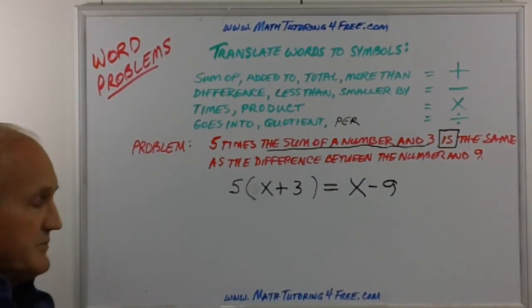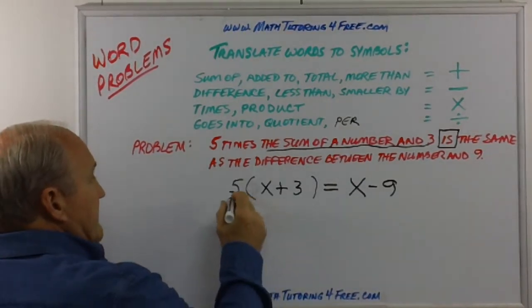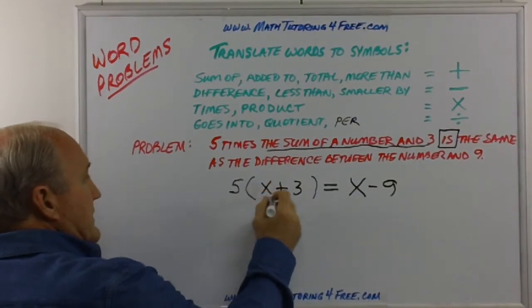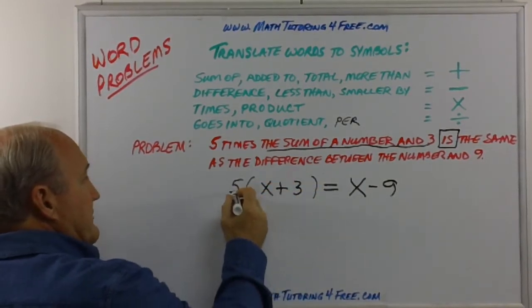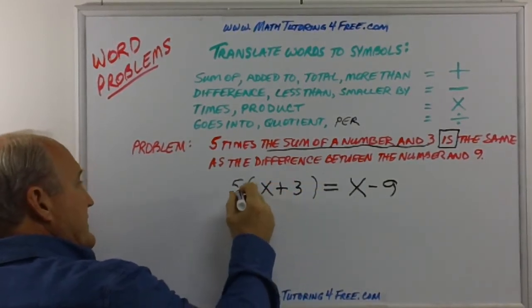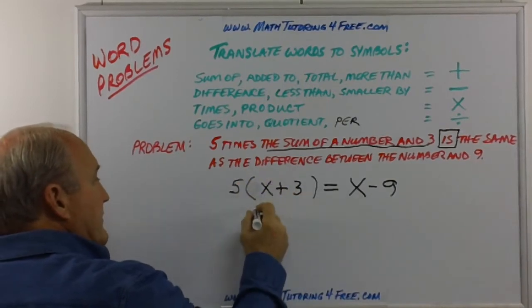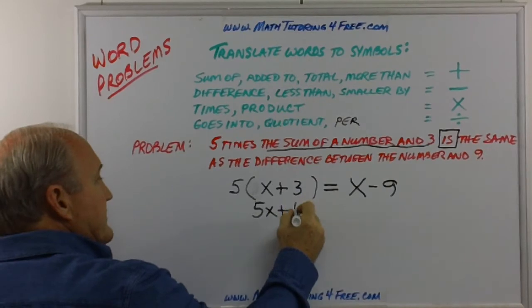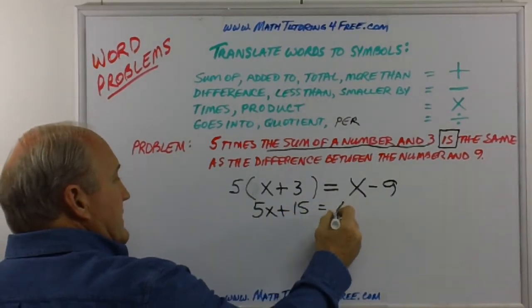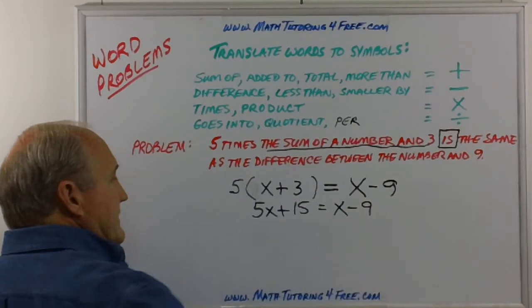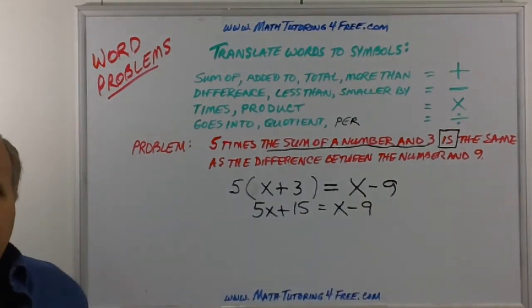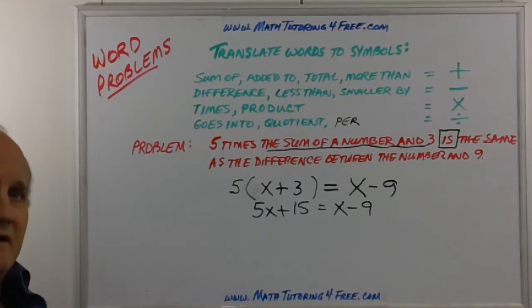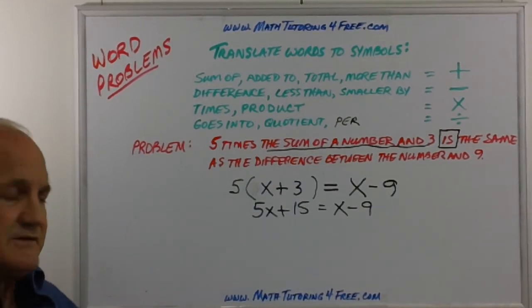Okay, now we've got it in the equation that should be fairly simple to solve. Five, when we want to get rid of the parentheses, we multiply by the number, we distribute that by both. So five times X plus five times three is equal to X minus 9. Okay, again we want to solve for the unknown. We get all the Xs to one side, everything else to the other.